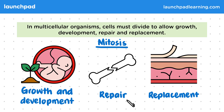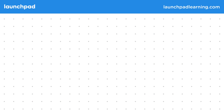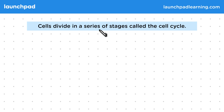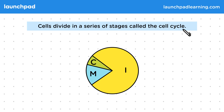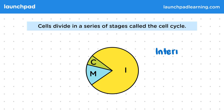So how do animal and plant cells divide? Cells divide in a series of stages called the cell cycle. There are three stages which we call a cycle as it goes around. This stage here, represented by I, is interphase.